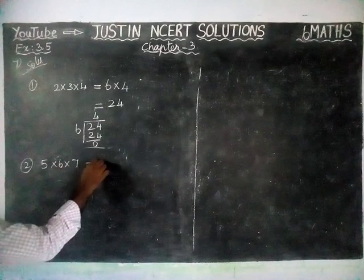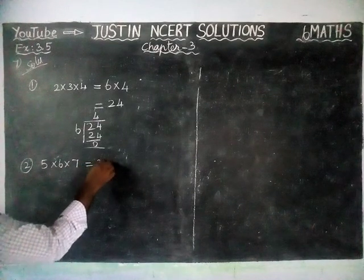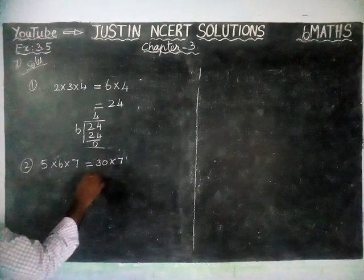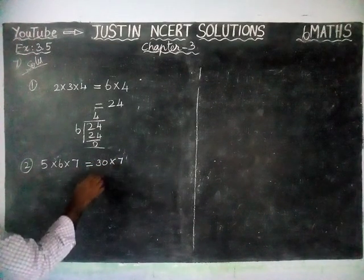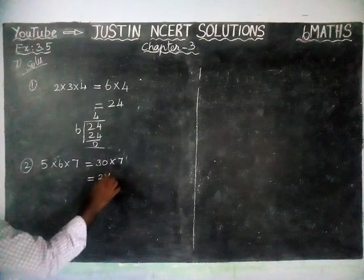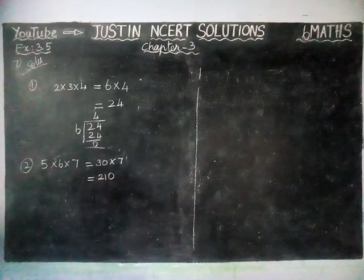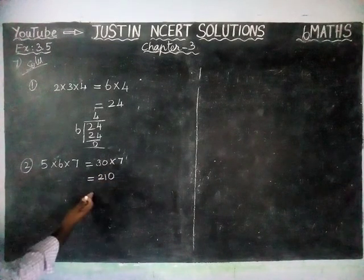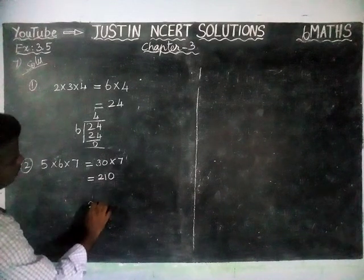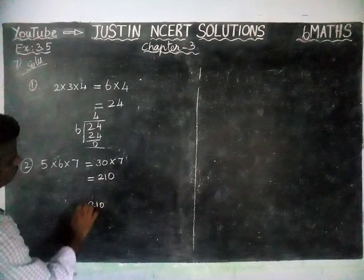5 into 6 are 30, into 7 is equal to 210. Now we are going to check if 210 is divisible by 6 or not.